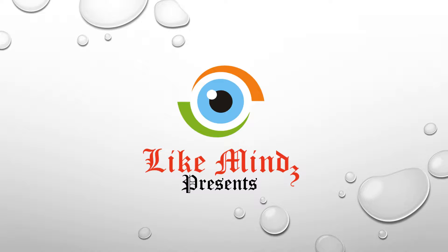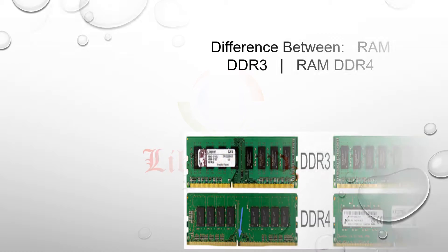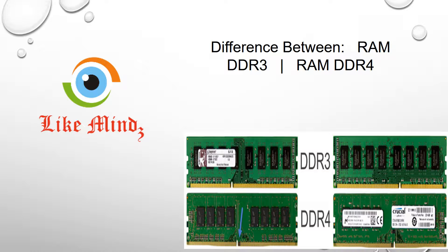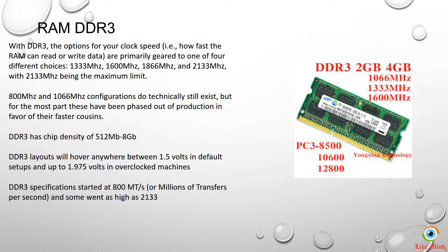Welcome to Like-Minds Difference Between series. Let's see the difference between DDR3 and DDR4 RAM modules. With DDR3, the clock speed options — how fast the RAM can read and write data — are primarily four choices: 1333 MHz, 1600 MHz, 1866 MHz, and 2133 MHz, with 2133 MHz being the maximum limit.